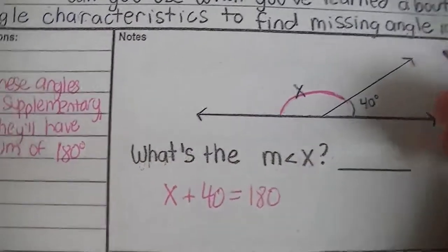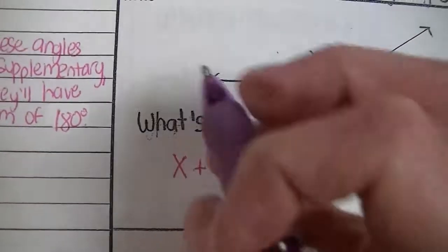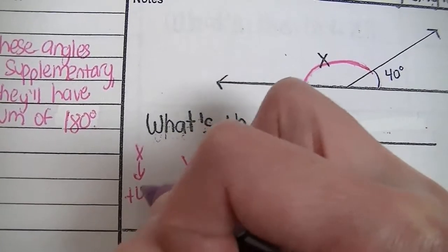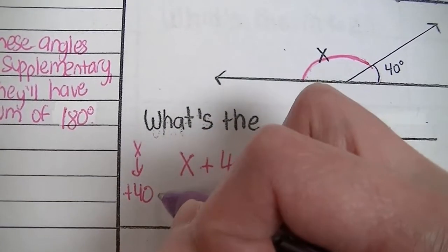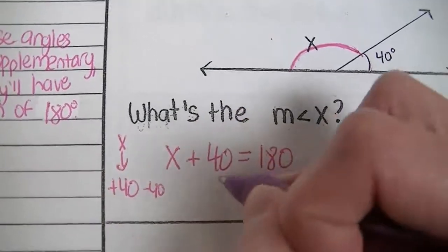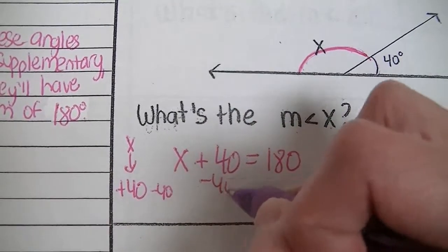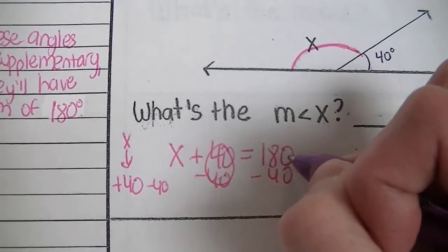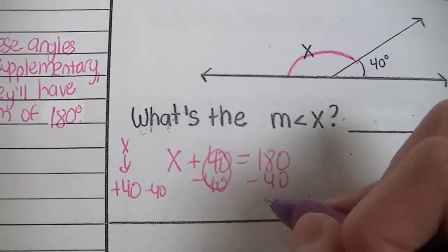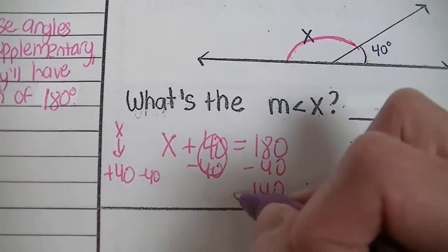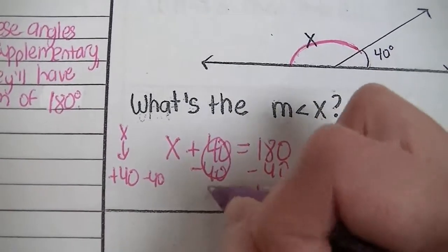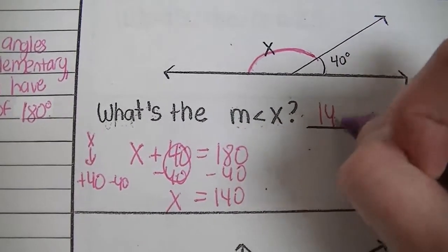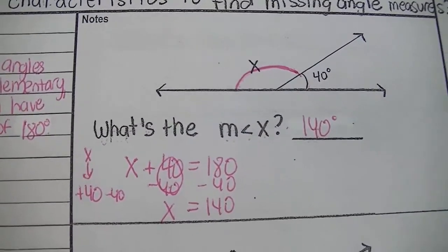Here's one way you can solve it. Start with the equation: X + 40 = 180. The inverse operation of adding 40 is to subtract 40, so do that to both sides of the equal sign. 40 minus 40 is 0. 180 minus 40 is 140. Bring down your equal sign and your X. So the measurement of angle X is 140° — don't forget your degree sign.